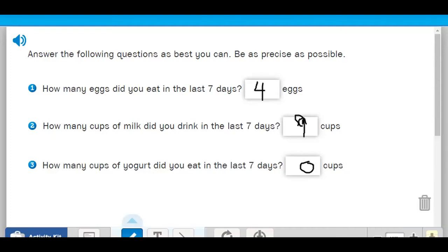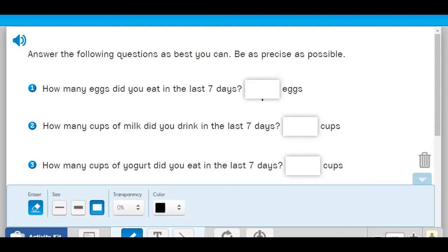Okay, so these are my answers. You don't need to, it doesn't mean that they're right for you though. I think I ate about 4 eggs. I probably had about 9 cups of milk because I have milk in my coffee. How many cups of yogurt? I didn't actually have any yogurt, so I put 0.